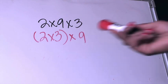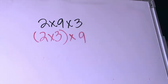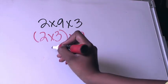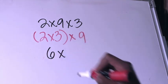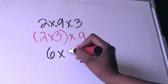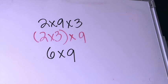Making sure to follow the rule of whatever's in the parentheses must be done first, I'm going to multiply 2×3 which is going to be 6 and then I'm going to multiply that by 9.